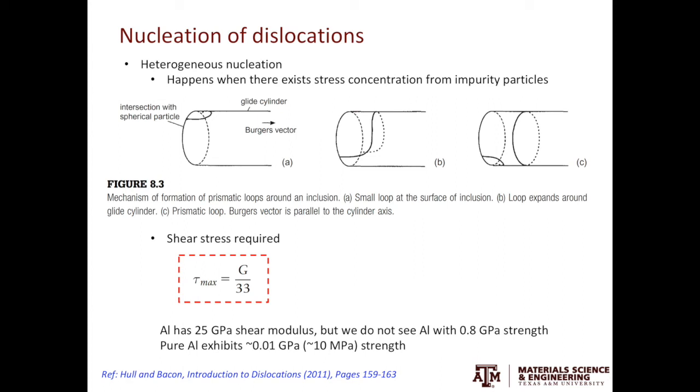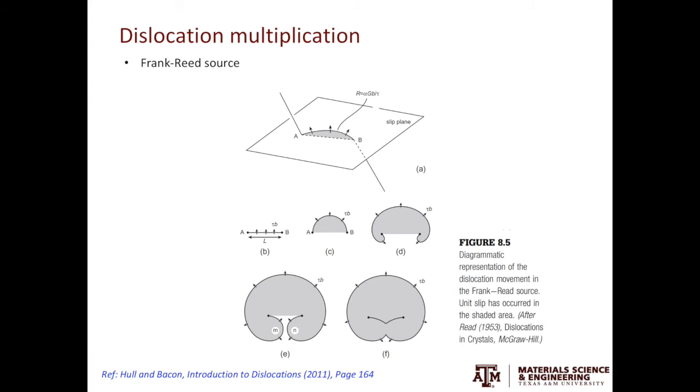In order to successfully explain the strength of metals as well as the high density of dislocations observed after plastic deformation, we need to turn away from the nucleation model to the dislocation multiplication model. The most widely used dislocation multiplication model is based on the Frank-Reed source model.